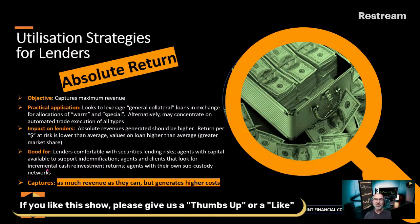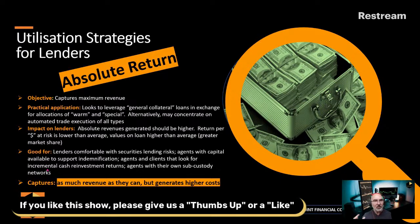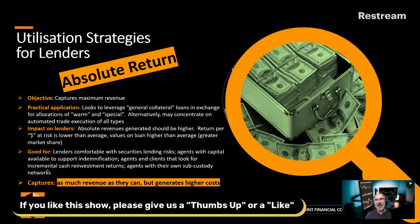Strategy number two: absolute return. As the picture indicates, this is about making as much money as you can — it's about capturing the maximum revenue. So here, rather than trying to focus on the securities that are most in demand, we're just trying to meet whatever the demand is — widely available or really narrowly available. The truth is I want to cover the whole spectrum: I want to lend out anything I possibly can because all I want to do is make money. So I need to get as much on loan as I possibly can.